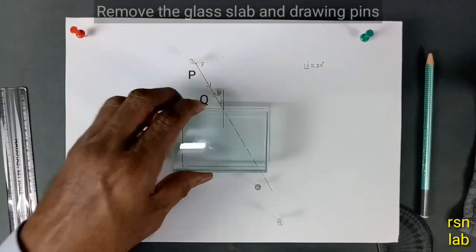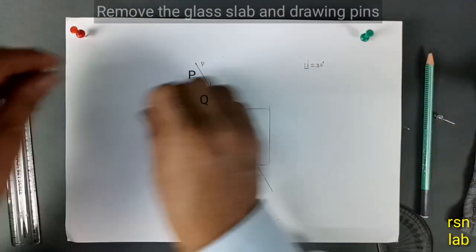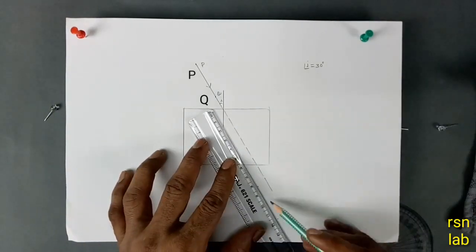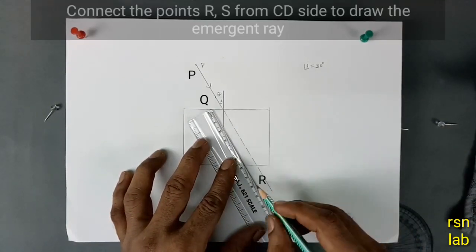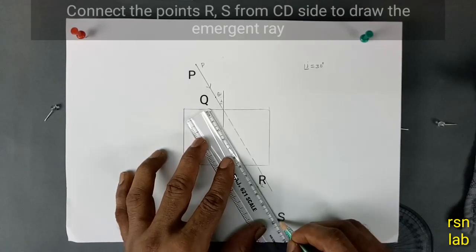Remove the glass slab and drawing pins. Connect the points R, S from CD side to draw the emergent ray.